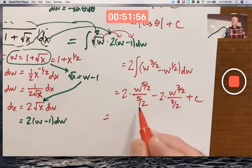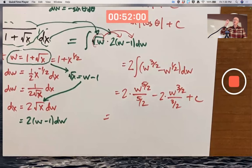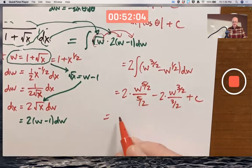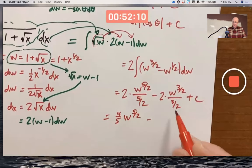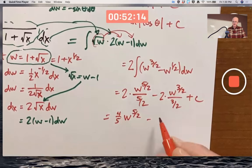Dividing by 5 halves is the same as multiplying by 2 fifths. Divide a fraction by a fraction, you get a multiply times its reciprocal. 2 times 2 fifths is 4 fifths. Dividing by 3 halves is the same as multiplying by 2 thirds. 2 times 2 thirds is 4 thirds.